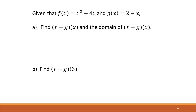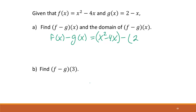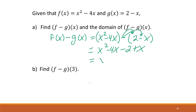Here we're looking at a subtraction problem. We compute f(x) minus g(x) — that's (x² − 4x) minus (2 − x). We need to distribute the negative on the second term, giving minus 2 plus x. Combining like terms, we get x² − 3x − 2 as our solution. The domain of this polynomial is negative infinity to positive infinity.